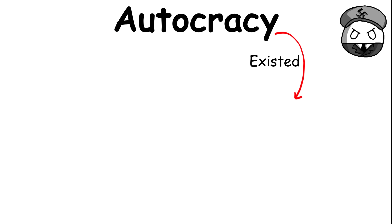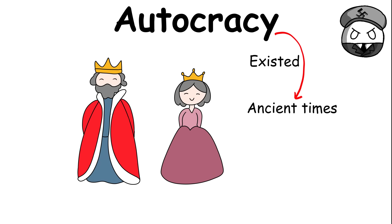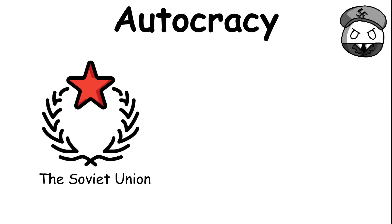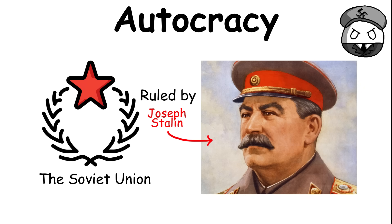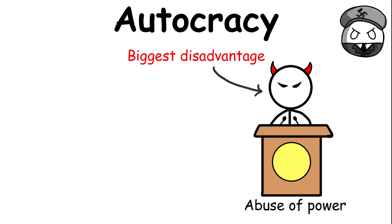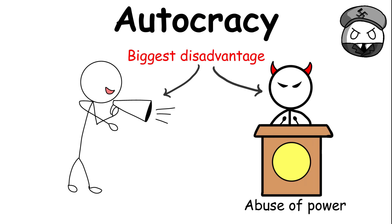Autocracies have existed since ancient times, usually in absolute monarchies where the king's word is the law. The Soviet Union, once ruled by Joseph Stalin, is one of the more recent examples of an autocracy. The biggest disadvantage of an autocracy is the potential abuse of power by the autocrat, who may become a dictator.